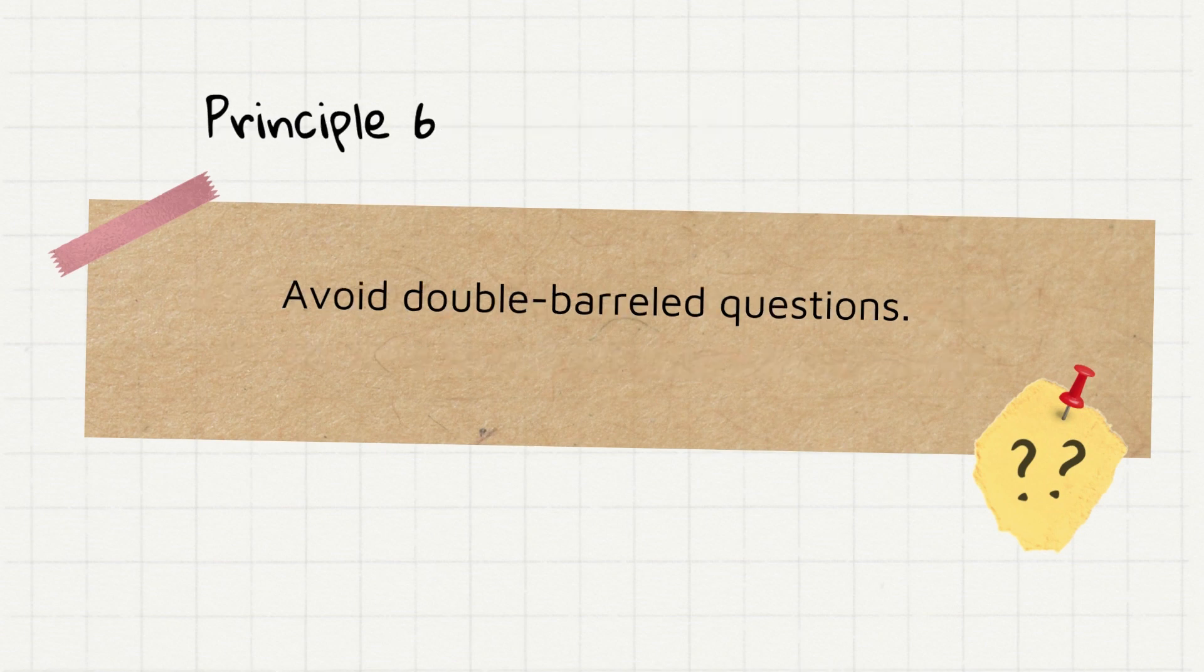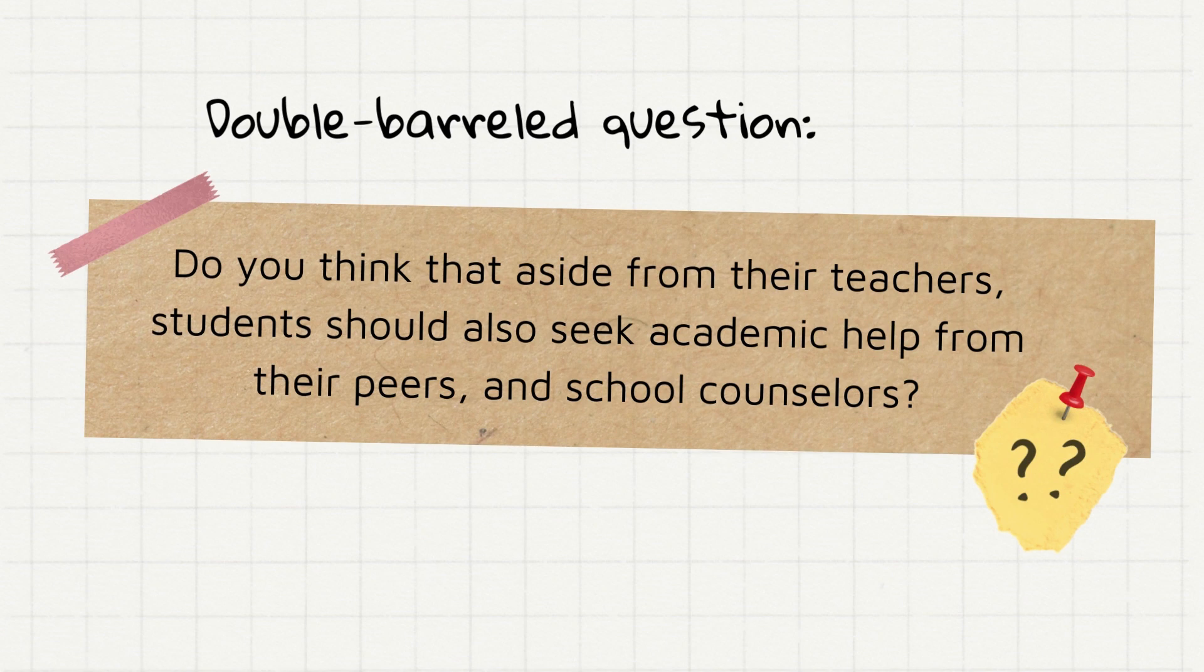Principle 6 is avoid double-barreled questions. A double-barreled question is a question that combines two or more issues or attitude objects. Here is an example. Do you think that aside from their teachers, students should also seek academic help from their peers and the school counselors? As you can see, there are two attitude objects here,